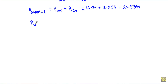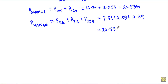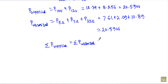Now I will calculate total power absorbed. Total power absorbed = power absorbed by 5 ohm + 7 ohm + 23 ohm resistors = 7.61 + 2.09 + 10.89 = 20.59 W. This implies that summation of power supplied equals summation of power absorbed, so I can say the second statement of Tellegen's theorem is verified.